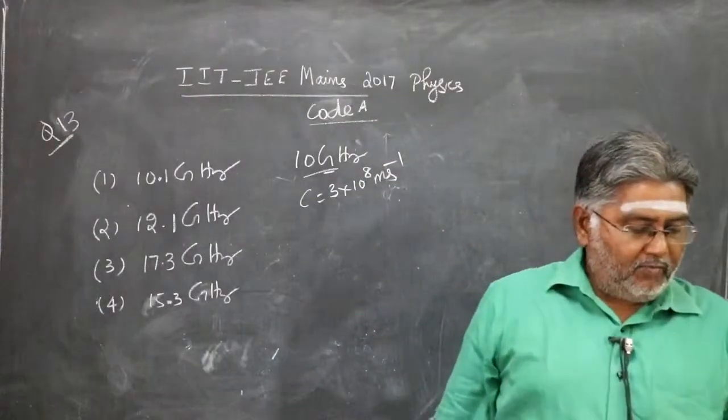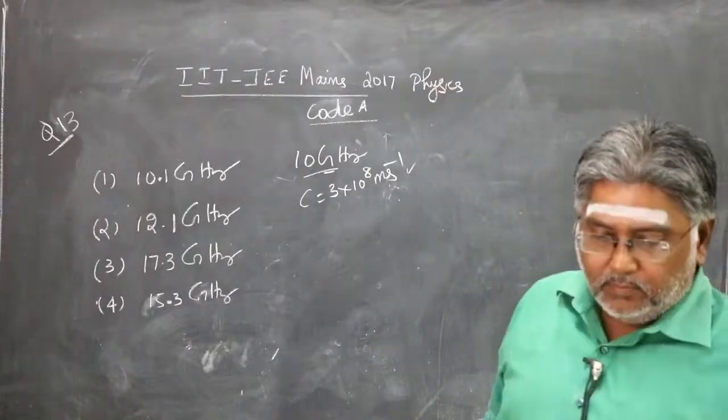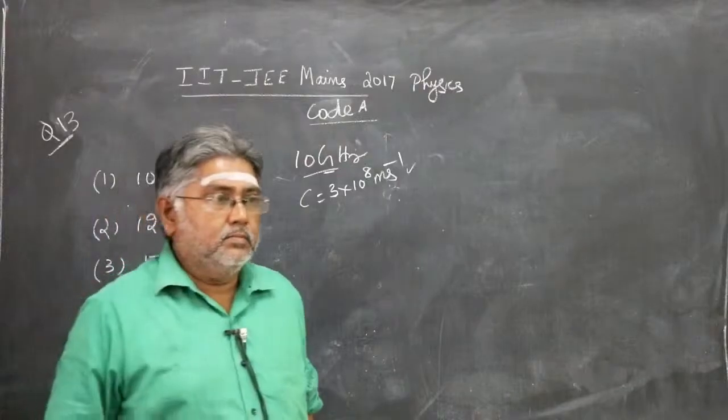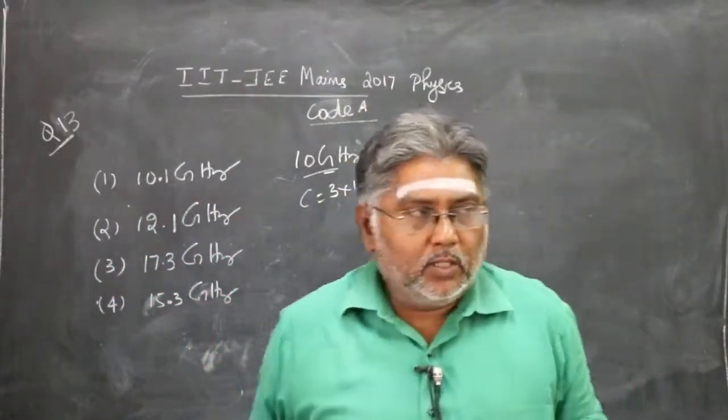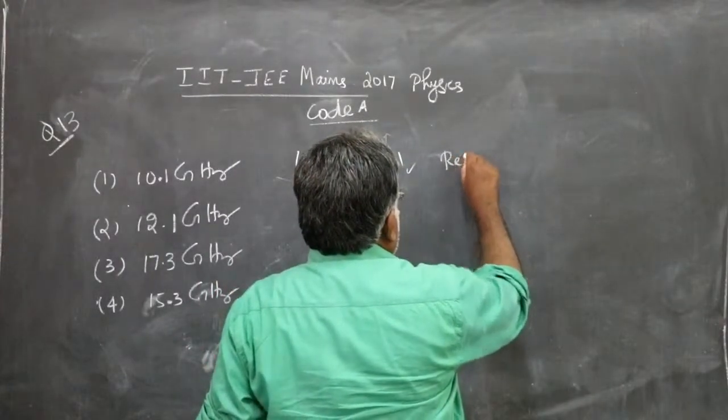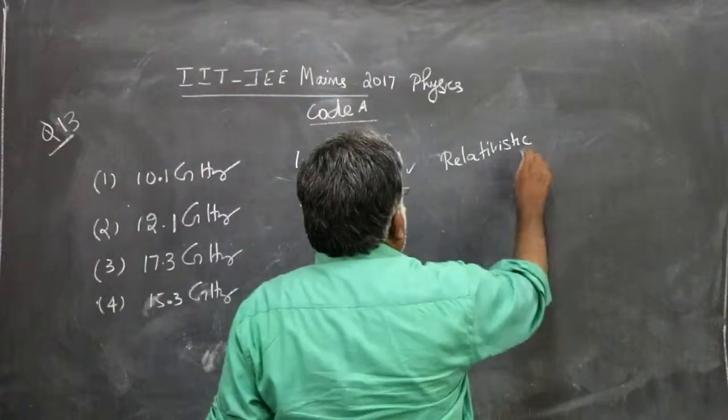Speed of light is given to be 3 × 10^8 meters per second. Now this is the case of what is known as relativistic Doppler effect.